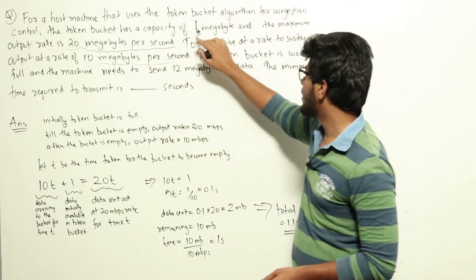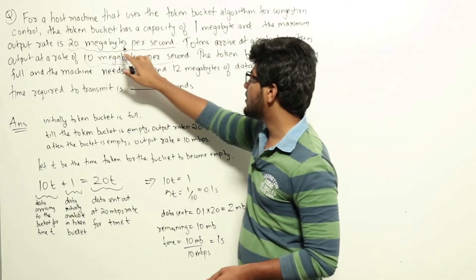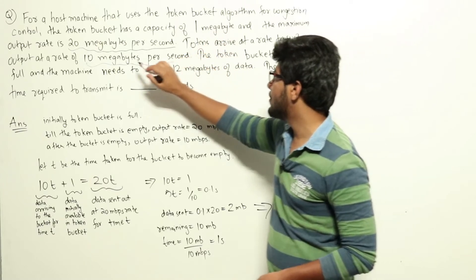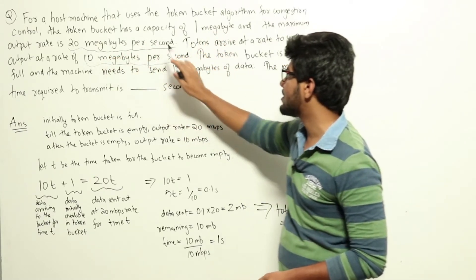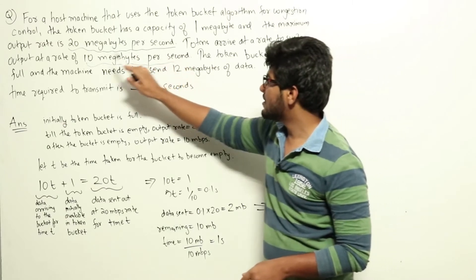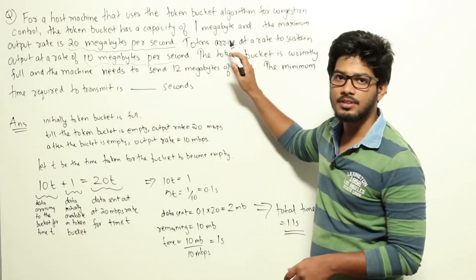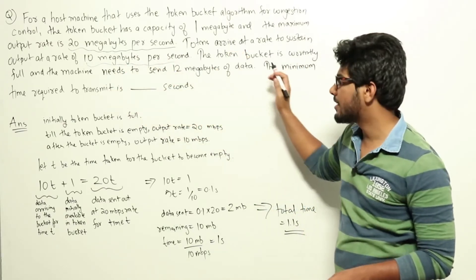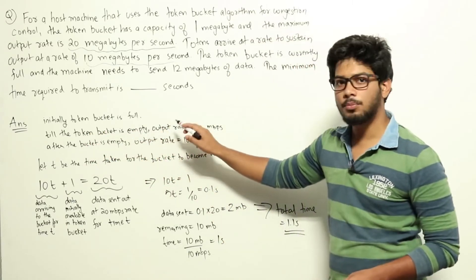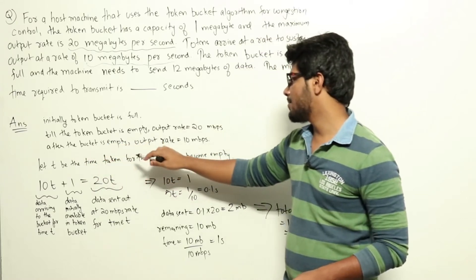Initially we had 1 megabyte worth of tokens in the bucket, so that data we can send out at a rate of 20 megabytes per second, plus whatever is coming into the bucket we can also send at 20 megabytes per second. But after the bucket becomes empty, tokens arrive at 10 megabytes per second, so we can output at 10 megabytes per second only. Till the token bucket is empty, the output rate will be 20 megabytes per second; after it becomes empty, the output rate will be 10 megabytes per second.